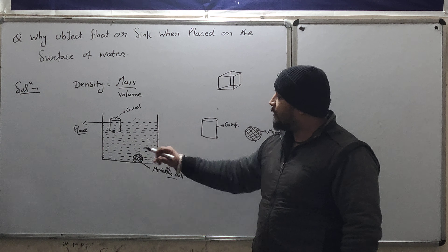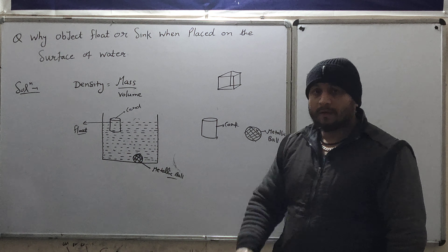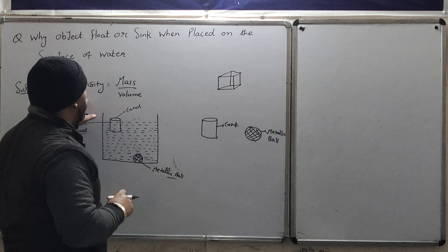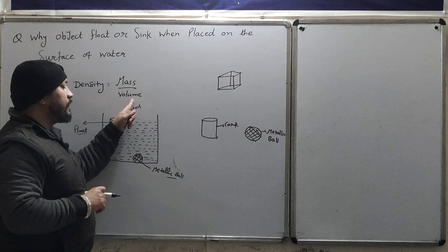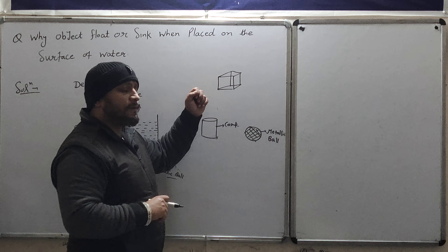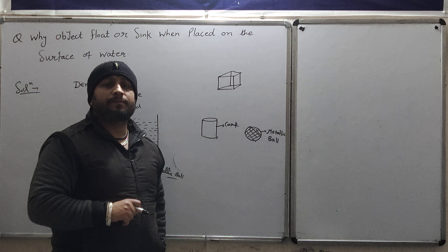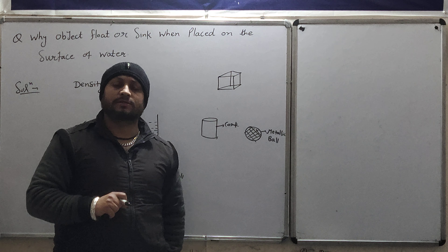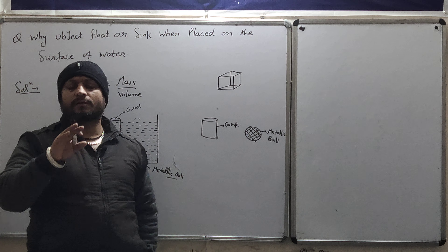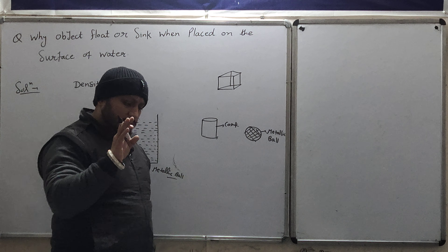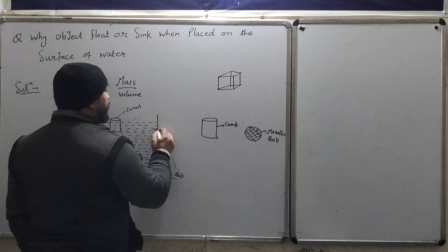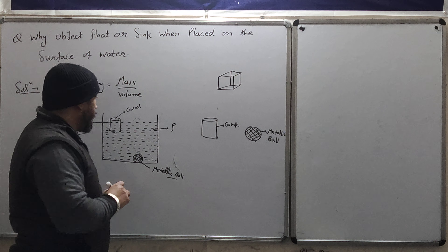As soon as I placed this cork inside the beaker, you can see that the cork started floating on the surface of the water. And as soon as I dropped the metallic ball inside, the metallic ball sank. This is exactly our question — why did this happen? The cork was floating on the water's surface, it did not sink; and the metallic ball went down and sank inside the water.